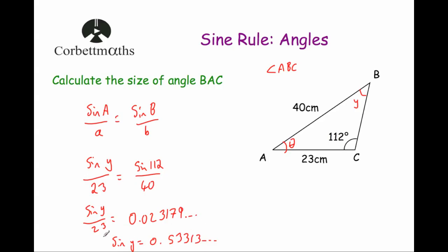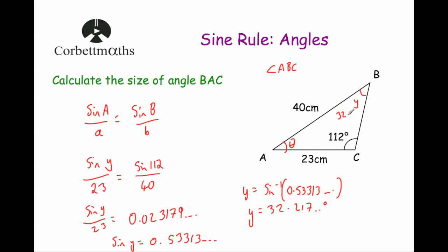Don't round any of these numbers. I want to know what Y is, not sine Y. So Y equals inverse sine, or shift sine, of 0.5331 and so on. Pressing shift sine and answer gives Y equal to 32.217 degrees and so on. We want angle BAC, so we do 180 minus the sum of 32.217 and so on, plus 112, and that gives us angle BAC — theta — equal to 35.8 degrees to one decimal place.